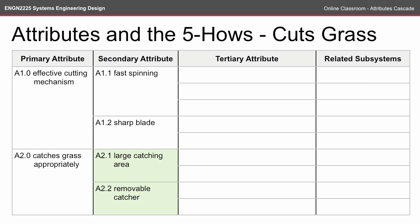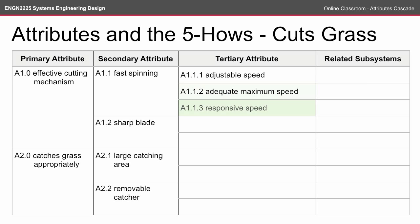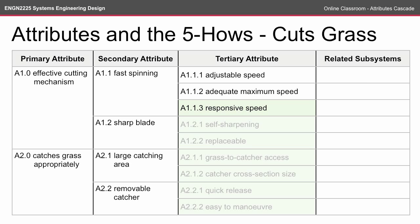When you go through your attributes cascade you might have more secondary attributes to describe how you're going to achieve the primary attribute. For the tertiary attribute we ask how again. So how are we going to achieve fast spinning? There's going to be an adjustable speed, an adequate maximum speed so it's fast enough to cut grass, and a responsive speed — so perhaps if we're cutting thick grass we want it to speed up a little bit. You continue this for all of the tertiary attributes.